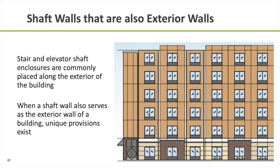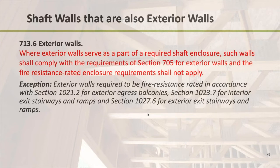We mentioned earlier the unique scenario of having a shaft wall that's also an exterior wall. This is common in multifamily occupancies where stair towers are at the ends or corners of the building. Turning to Section 713, it says if you do have this scenario of an exterior wall that's also a shaft wall, you're going to follow the code requirements for exterior walls — not for shaft walls — because there are some conflicting requirements. In that case, you follow just the exterior wall requirements.